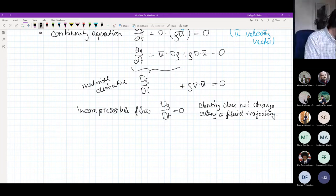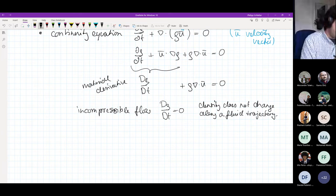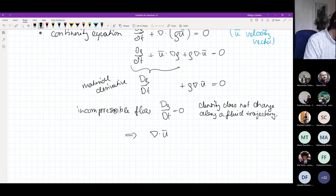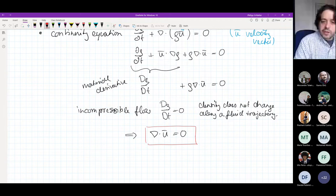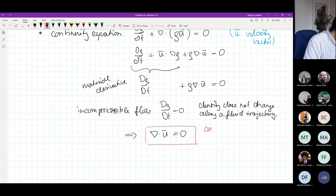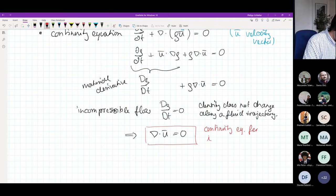If you go back to the equation, if you now say that d rho dt is zero, then as a consequence that means the second term needs to be zero, meaning that the divergence of u needs to be zero as well. That is exactly what we call the continuity equation for incompressible flow.